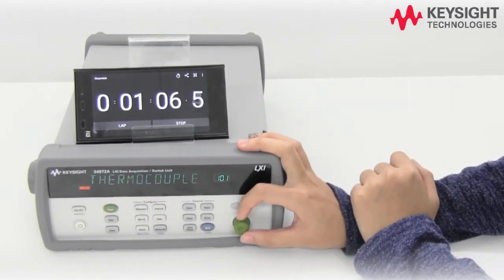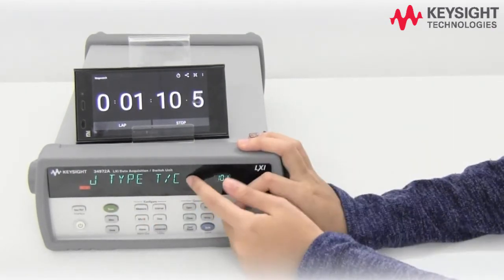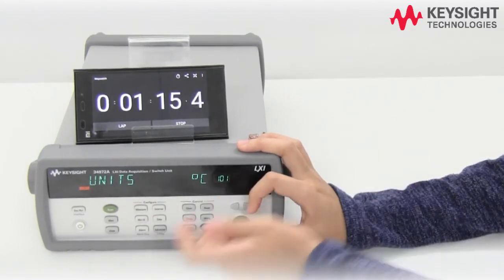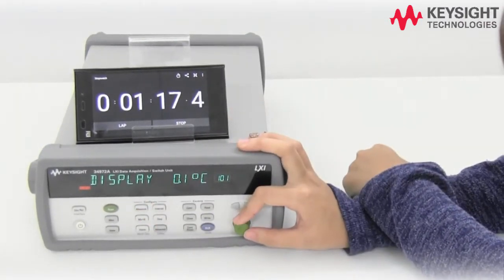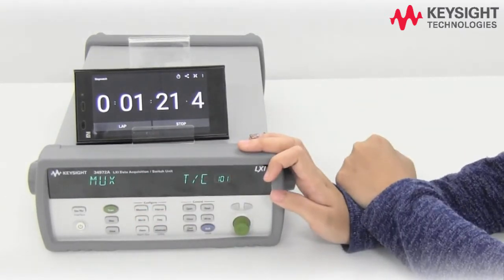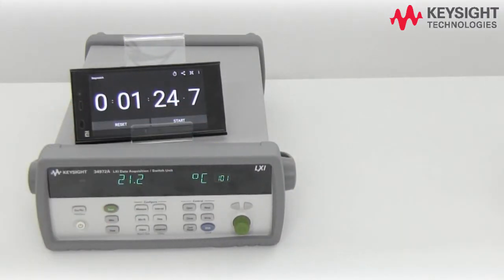J-type, that's our type, and then measure. We choose the units we want: degree Celsius. Select 0.1 resolution, press measure again, and finally press monitor to begin your measurement. Done!